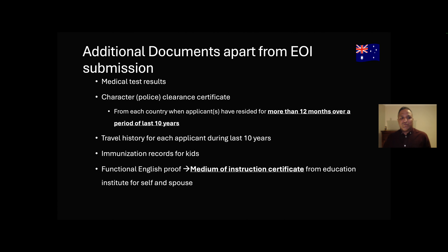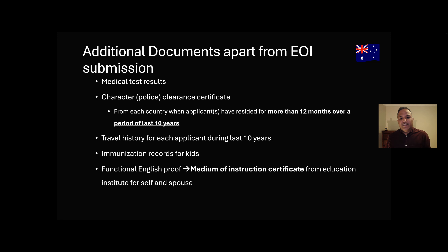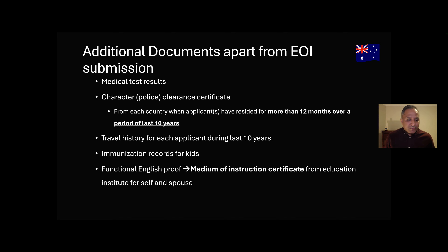The rest of the documents are similar: employment status, earnings, qualifications, and supporting documents. The additional documents required as part of the actual PR process include the medical test and the character certificate or Police Clearance Certificate — PCC. This is required for each country you have lived in for more than one year in the last 10 years. I also submitted travel history for each applicant during the last 10 years. For the kids I submitted immunization records, and we also need functional English proof or English proficiency — I submitted a medium of instruction certificate from my education institute for myself and my spouse.